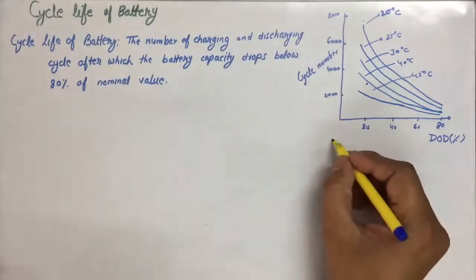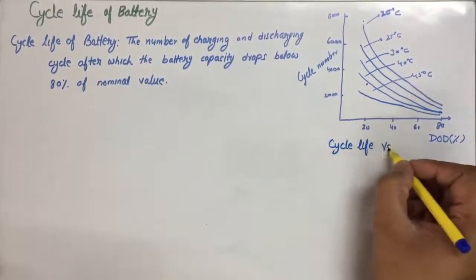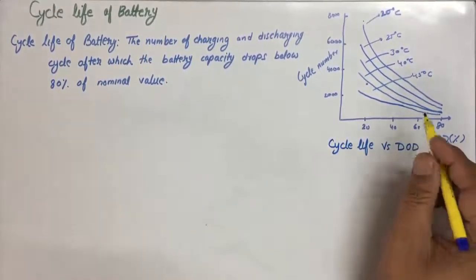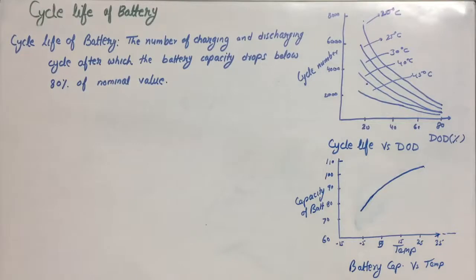This is the characteristics between cycle life of the battery versus DOD at any particular temperature. And when we plot the characteristics between battery capacity and temperature, then we find that the characteristics follow somewhat non-linear pattern. We find here that at lower temperature, the battery capacity is low and at higher temperature, the capacity is higher.